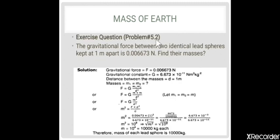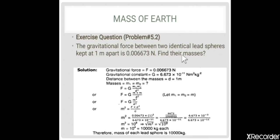Problem 5.2: The gravitational force between two identical lead spheres kept 1 meter apart is 0.006673 N. Find their masses. From the given data: F = 0.006673 N, D = 1 m. Since the masses are identical, M1 = M2 = M.